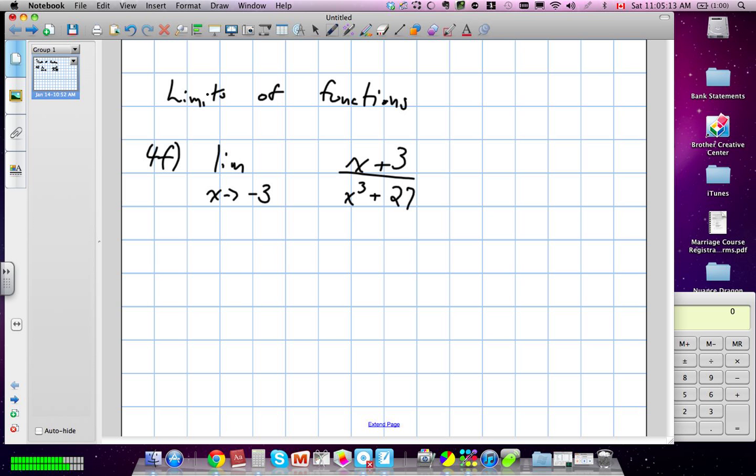And they've given us the function x plus 3 divided by x cubed plus 27. Okay, so first thing we have to remember is our difference or sum of cubes formula. If you have a cubed plus b cubed, it's essentially equal to a plus b times a squared minus ab plus b squared.